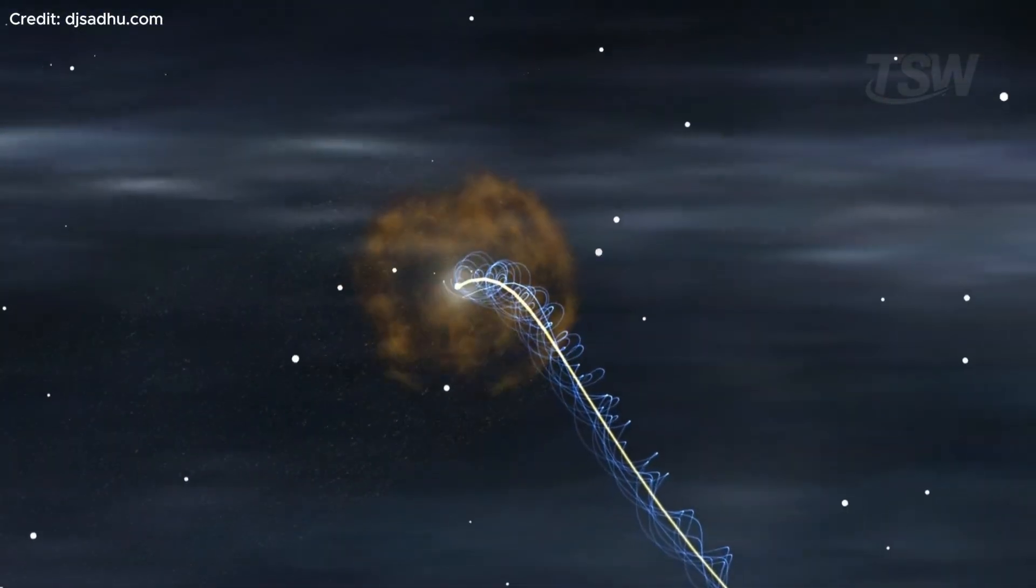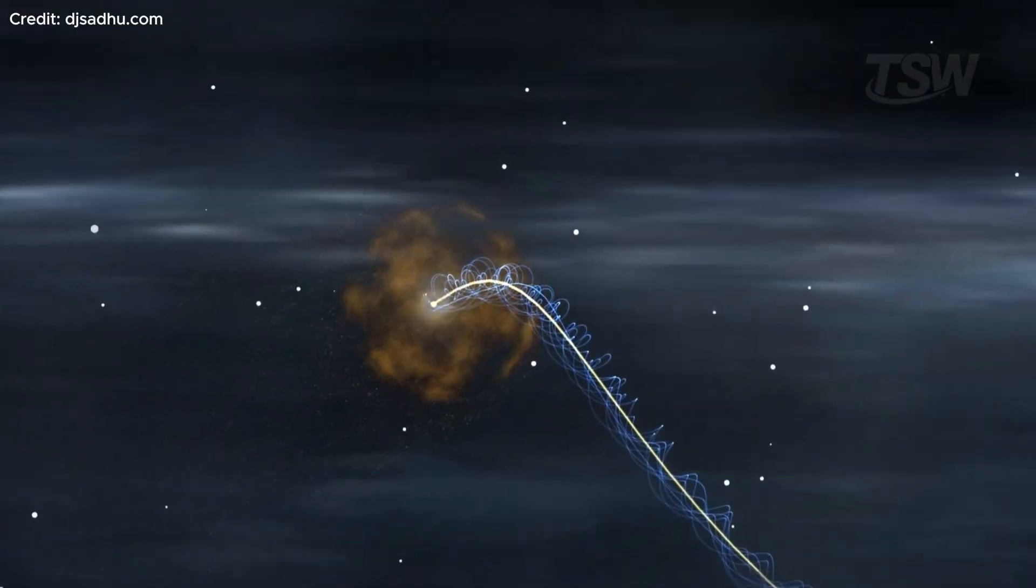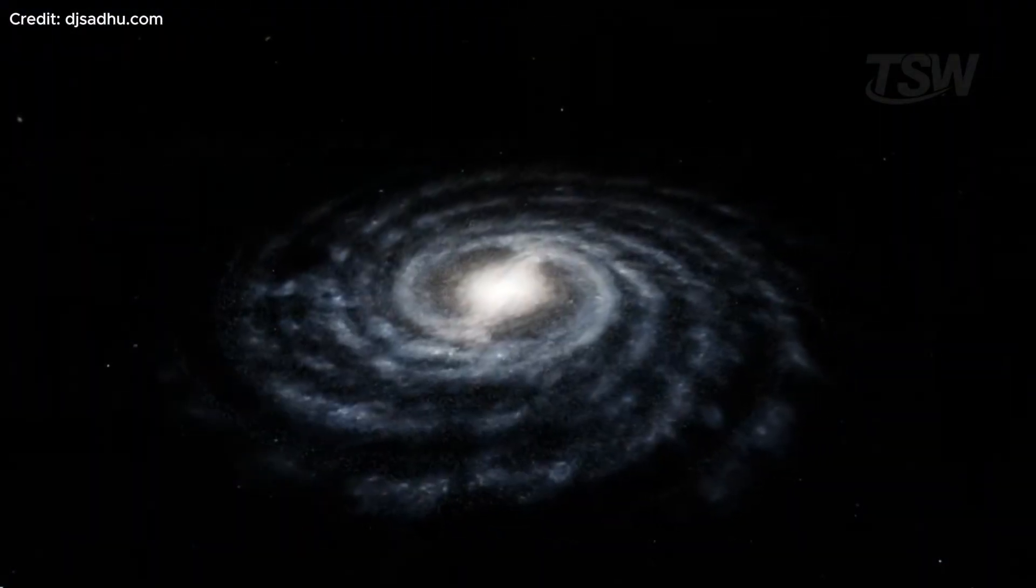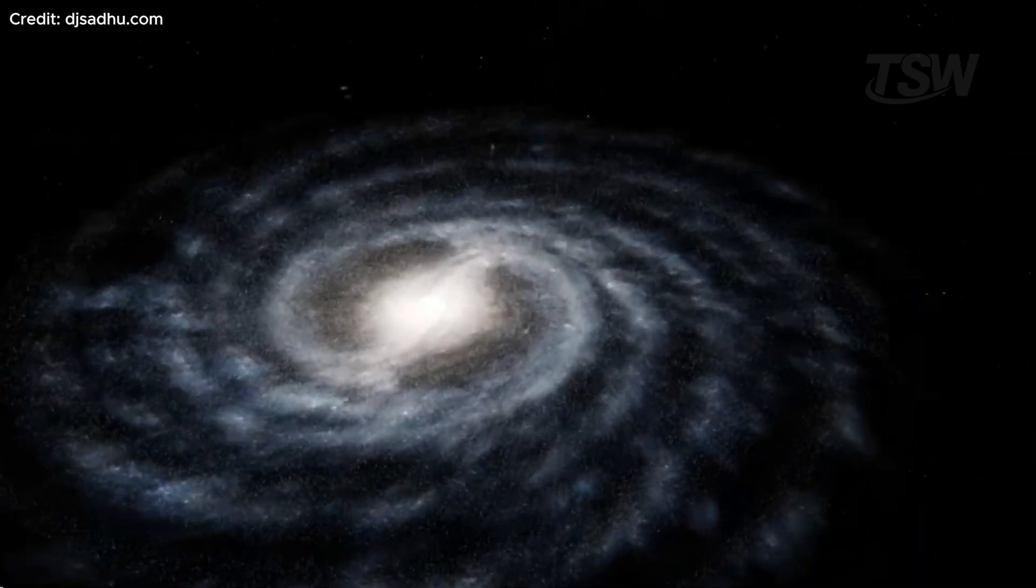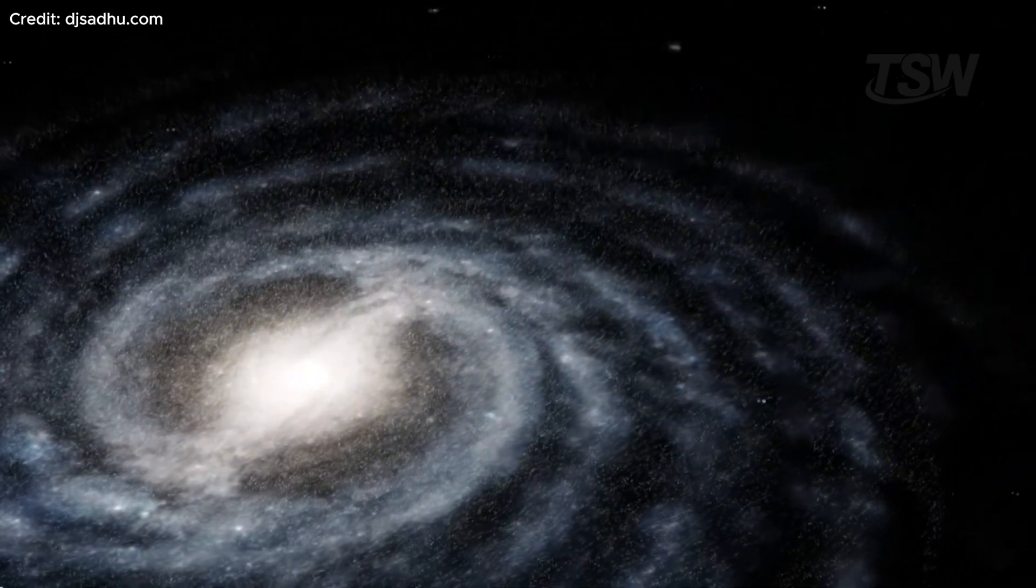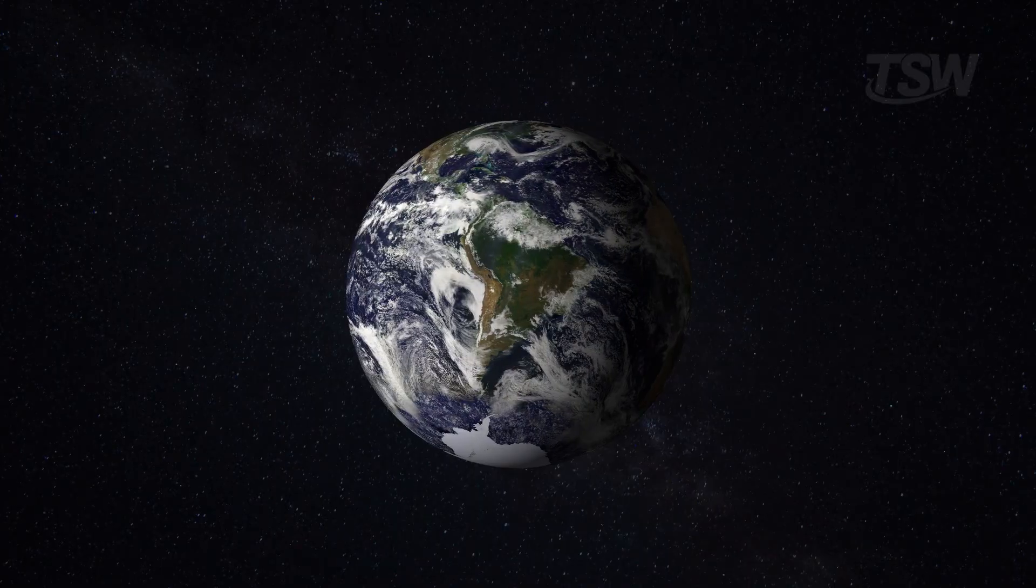Scientists believe this wave-like motion may have affected Earth's history. Each time the solar system crosses denser regions of the galaxy, the amount of radiation and cosmic dust increases, and that can alter our planet's climate.